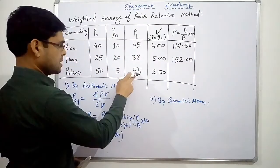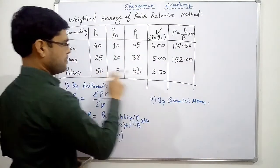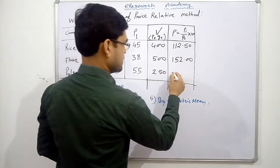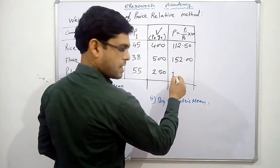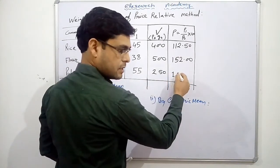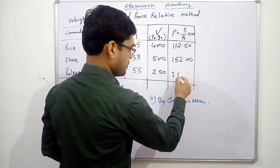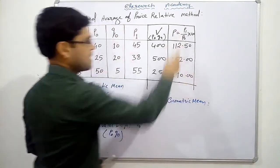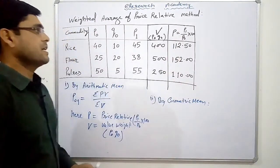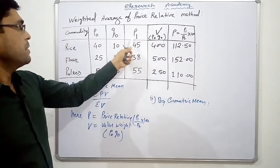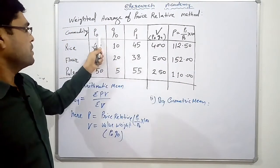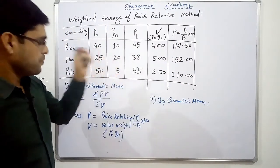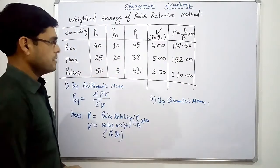The price relative for the last commodity: 55 upon 50 gives us 110. So these are our price relatives — p1 upon p0 into 100.